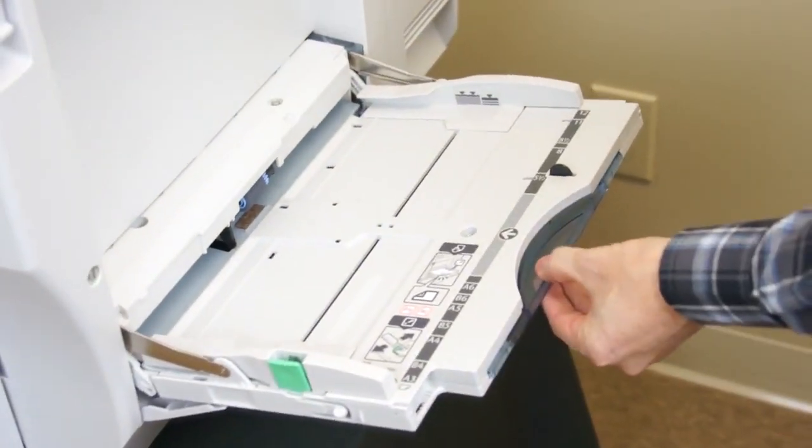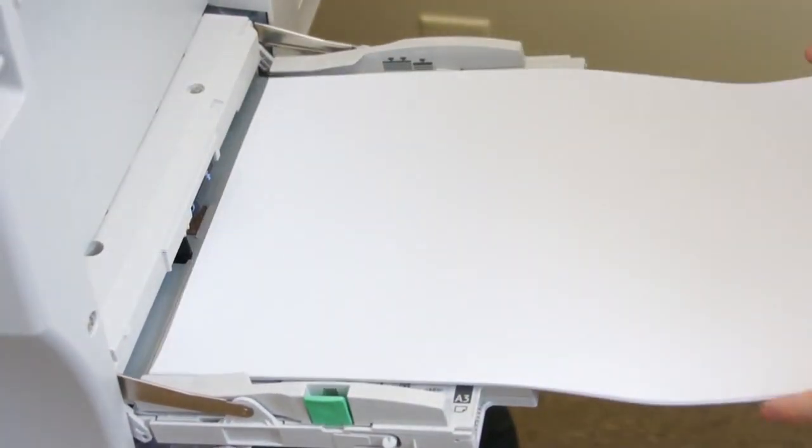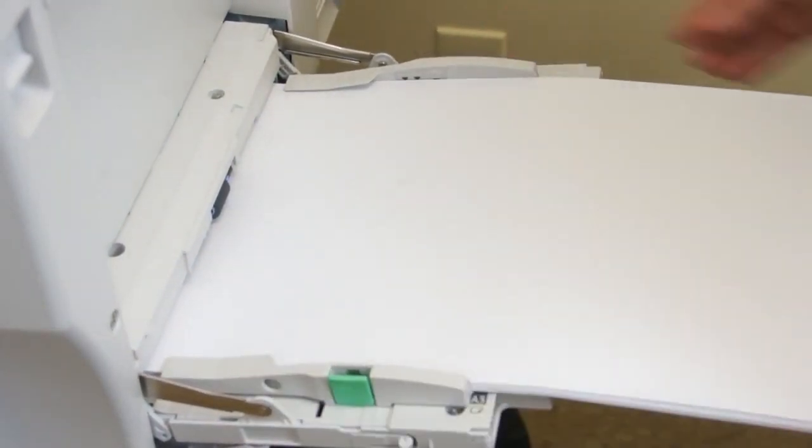To load the printer's bypass tray, first open the tray and pull out the bypass tray extension. Then load the media with the print side down, flush against the printer. Lastly, adjust the bypass tray's side guides to fit the media.